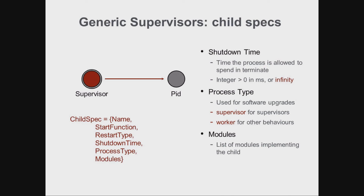The next argument in the child specification tuple is shutdown time — the maximum time the behaviour will be allowed to spend in its terminate callback function before the supervisor unconditionally terminates the child. When taking down a supervision tree, we don't want a child hanging in its terminate function trying to access some remote device it can't reach. This is a positive integer denoting time in milliseconds, or the atom infinity — which should only be used if your child is a supervisor — or brutal_kill, meaning the terminate function won't be allowed to execute.